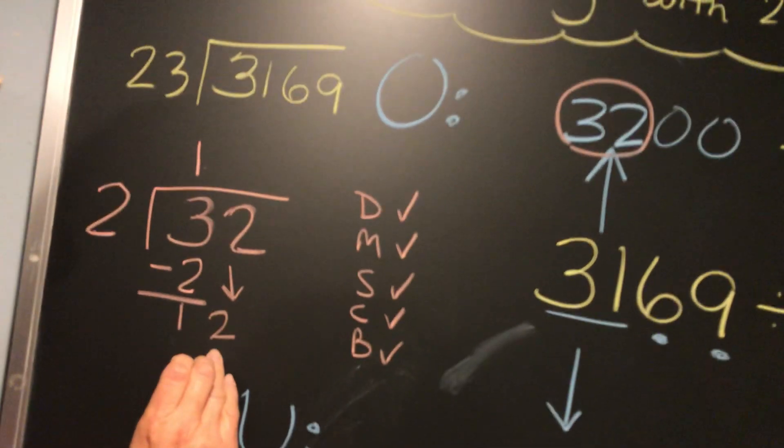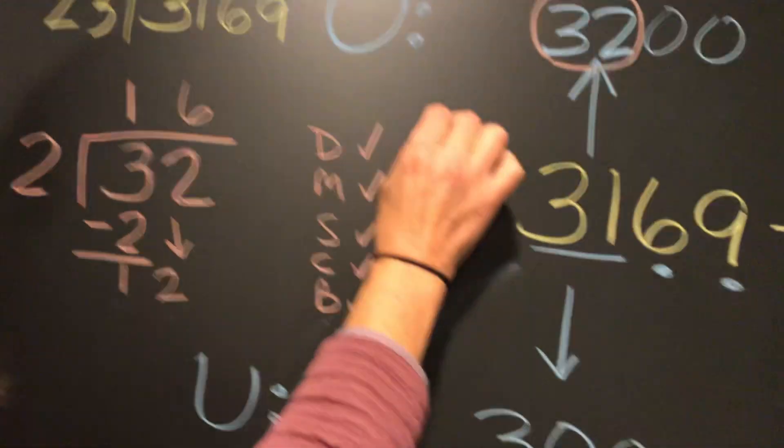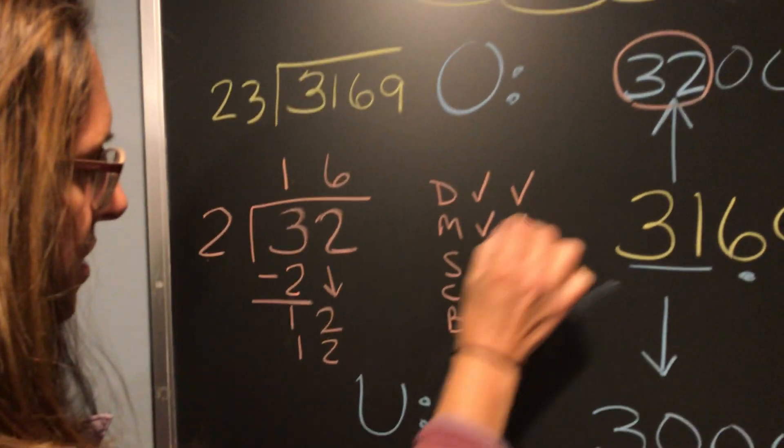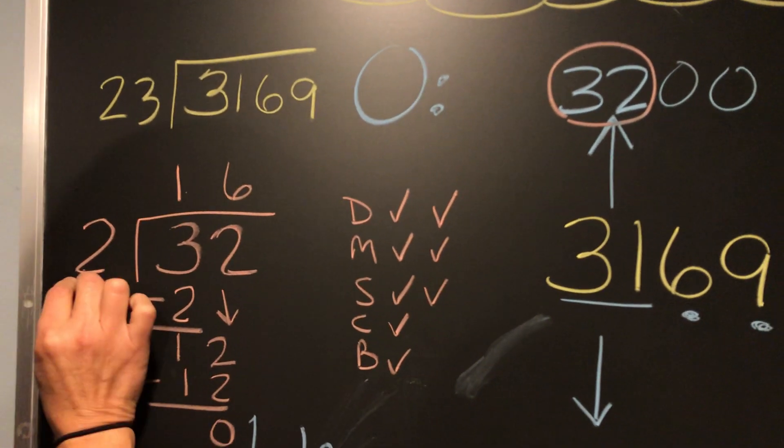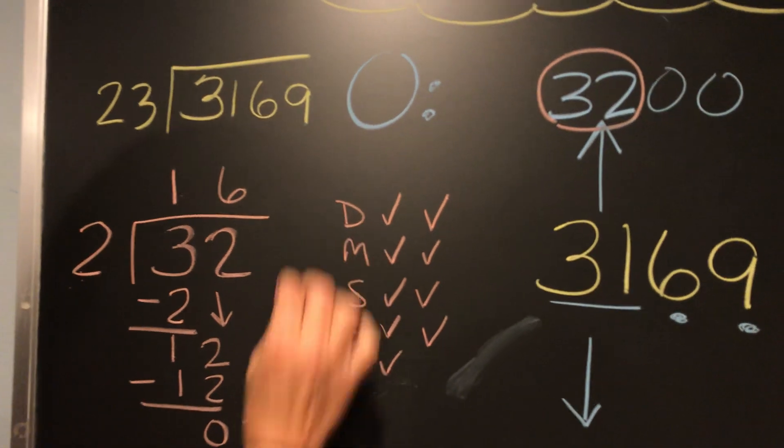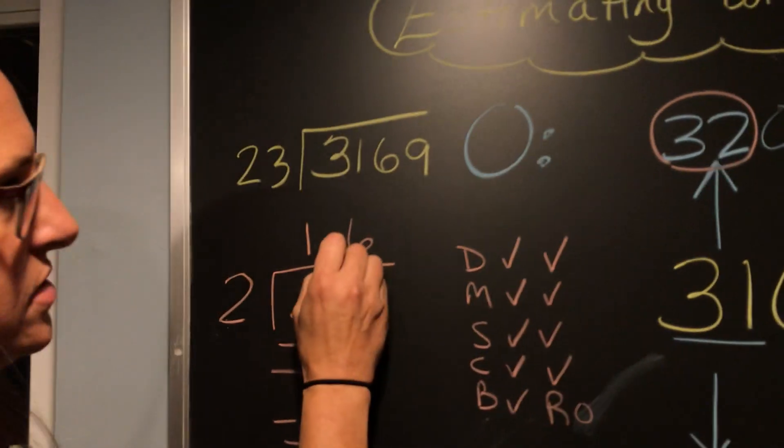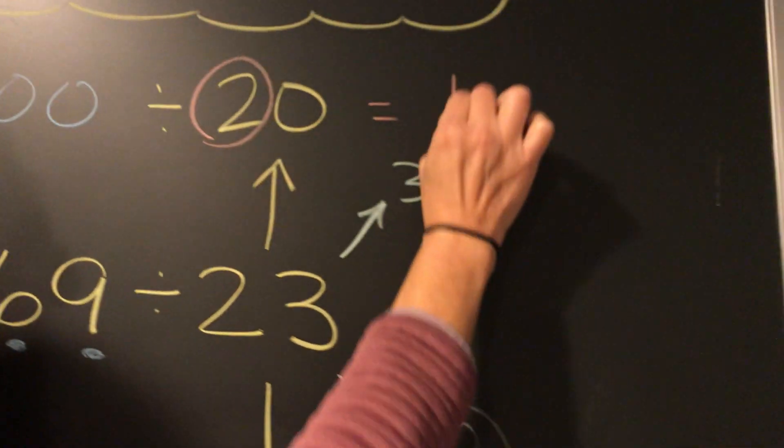Bring down the 2. So 32 divided by 2, and now we've got 12. We're dividing again. 12 divided by 2 gives me 6 in my quotient. 6 times 2 is 12. Subtract, you get 0. Is 0 less than 2? Yes, it is. Nothing to bring down. So we've got our remainder, which is 0. So our answer, 32 divided by 2, is 16.